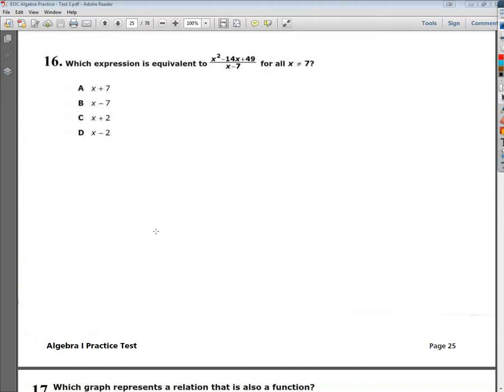The question says, which expression is equivalent to x squared minus 14x plus 49 over x minus 7 for all x not equal to 7?